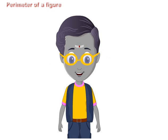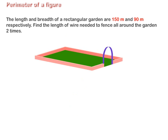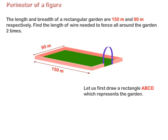Let us take one more example. The length and breadth of a rectangular garden are 150 m and 90 m respectively. Find the length of wire needed to fence all around the garden two times. Let us first draw a rectangle ABCD which represents the garden.